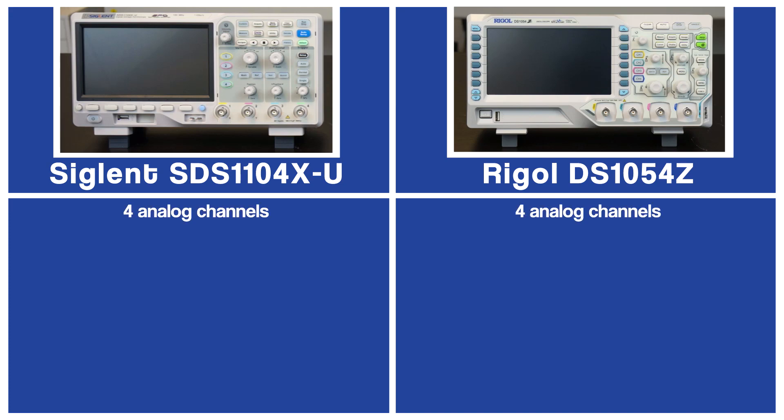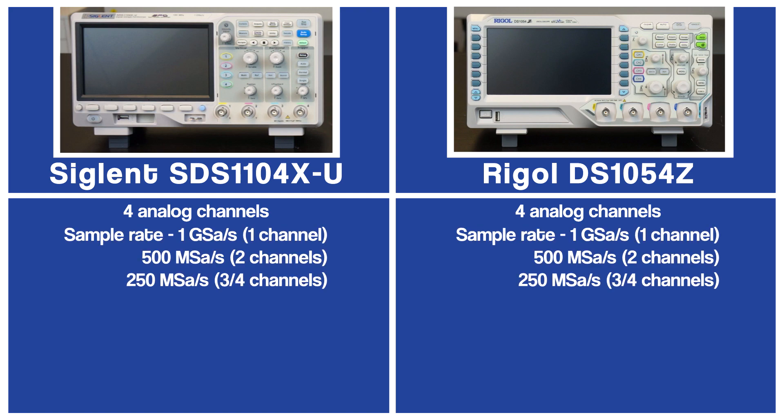First of all, both oscilloscopes have four analog channels. Furthermore, both oscilloscopes have a maximum sample rate of 1 gigasamples per second when there's only one channel active. When there are two channels active, the sample rate will be divided over both channels, decreasing to a maximum of 500 megasamples per second per channel. With three or four active channels, the sample rate is a maximum of 250 megasamples per second per channel.